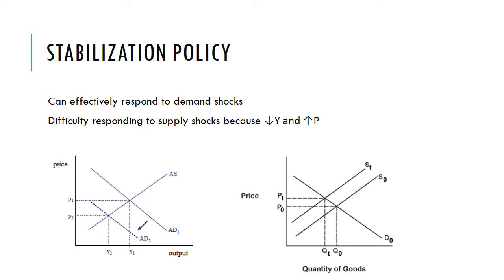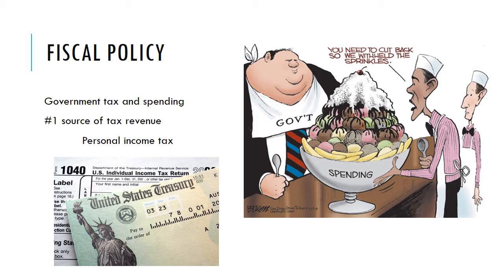When it's a supply shock, on the other hand, that doesn't really work too well because output and prices are moving in two different directions. Output is falling while price level is going up. If you increase aggregate demand, that's going to lead to higher output, which is good, but it's going to lead to an even higher price level, which is bad. Or if you decrease aggregate demand, the price level falls, which is good, but now output is even smaller, which is definitely bad. So it's useful for demand shocks, not so useful for supply shocks.